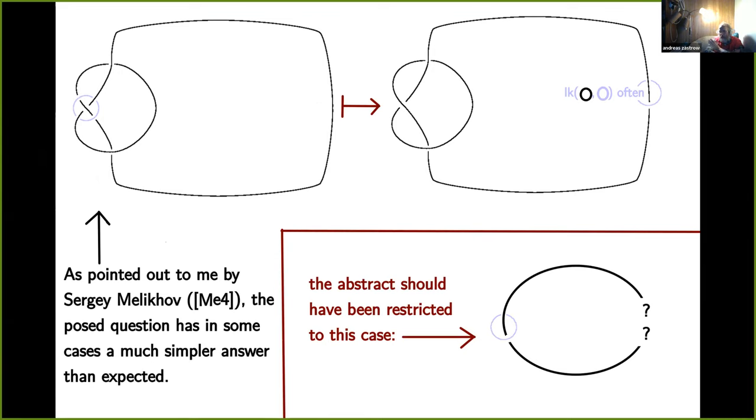This is the observation that Sergey had when you read my abstract. In the case I wasn't primarily interested in but which isn't excluded in the way I currently phrased the abstract, the question has a much more easy answer. If you have such a knot which is hung up by a local knot of the moving string, in a special case where the linking number of the blue knot with the black one is zero.